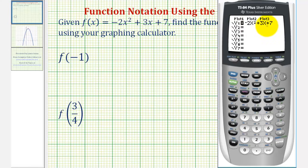Now we'll go back to the home screen to determine these function values. But instead of entering f of negative 1 and f of 3 fourths, we'll enter y1 of negative 1 and y1 of 3 fourths. Press second mode to go back to the home screen.